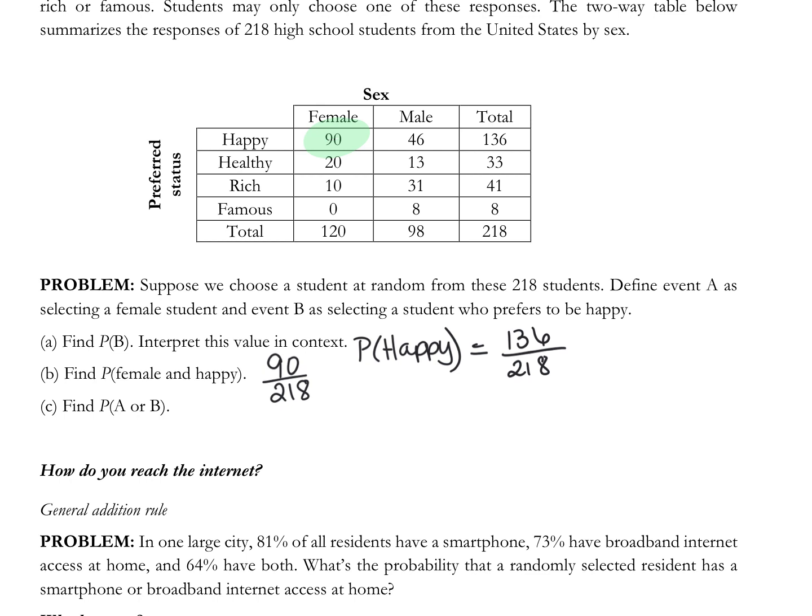We'll get to conditional probability tomorrow where I say, what's the probability that a female student said they wanted to be happy? That's different than female and happy because you're randomly selecting someone from the whole group, what's the probability it's female and happy? So from the whole group, not from the females. Then the second one is find the probability of A or B.